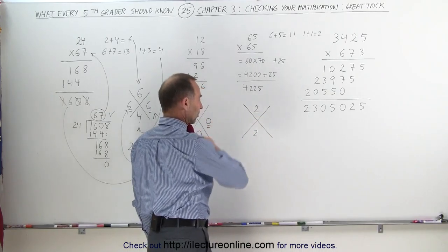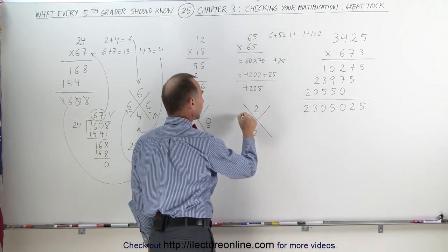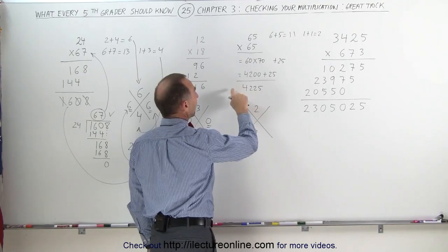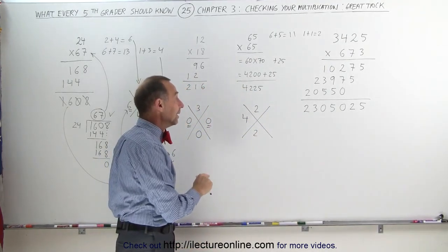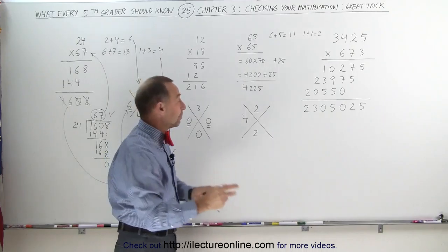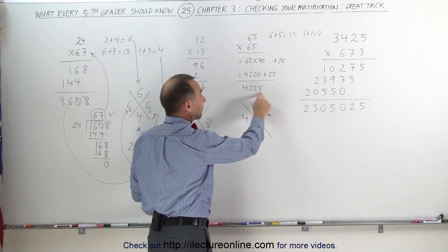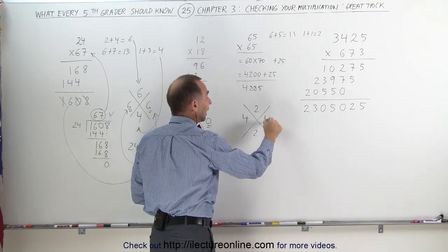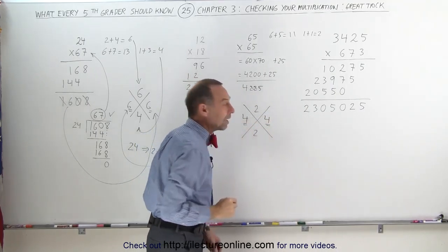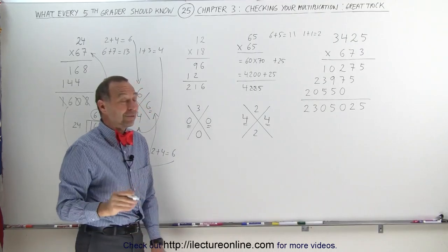Now you multiply these two numbers together. 2 times 2 gives me a 4. Now I add up all these numbers together, and they better add up to a 4. Again, any numbers that add up to 9, we can simply ignore. 2 plus 2 plus 5 is 9, so we can ignore those three numbers. All I have left is a 4, and sure enough, if those two numbers are the same, my multiplication is correct.